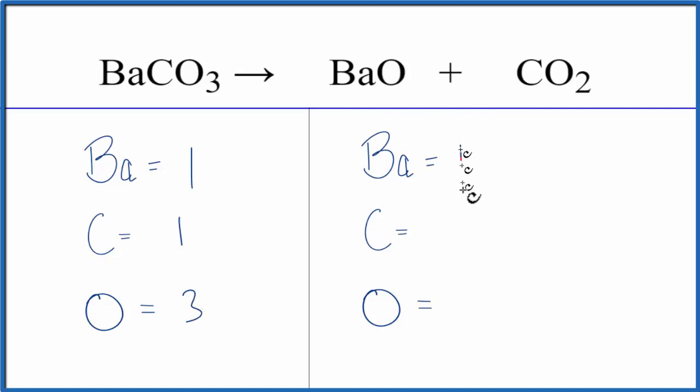On the product side, we have the one barium, one carbon, and then one oxygen plus. Be careful, there are two more oxygens. We need to count all of those. So that gives us three oxygen atoms on the product side of the reaction.